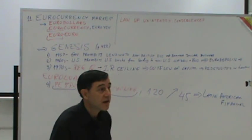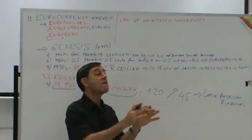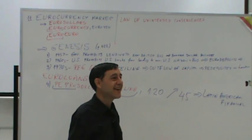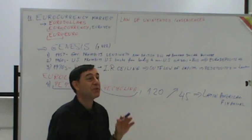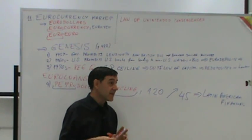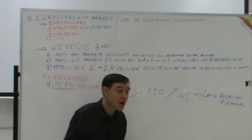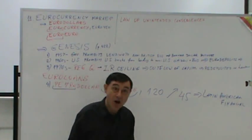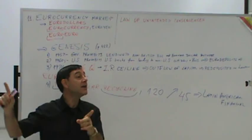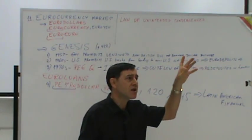When the US seizes Iranian money, the first step is freezing it — then seizing, meaning just taking it. That happened to Iran: the US seized Iranian government assets, Iranian businesses, and even ordinary Iranian citizens' assets completely. So oil-exporting countries don't want to keep dollars in the US.